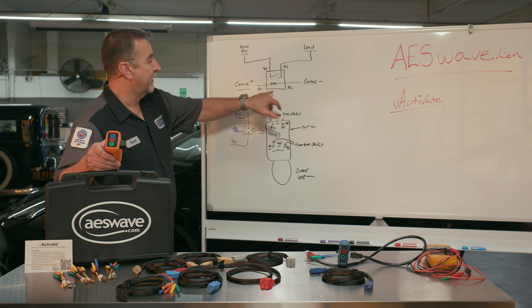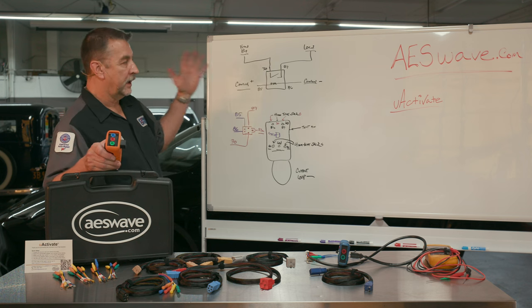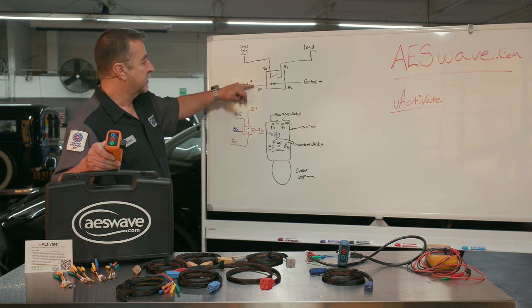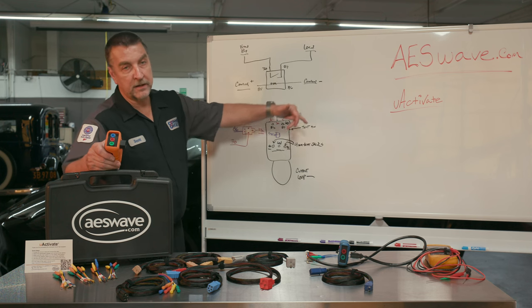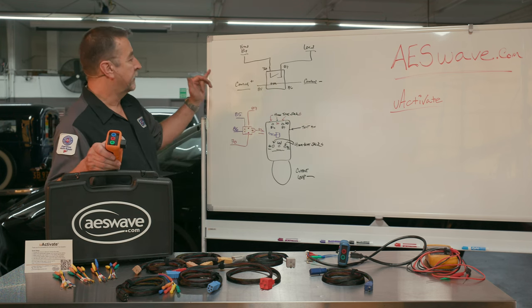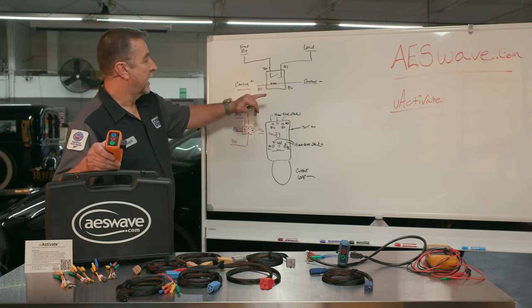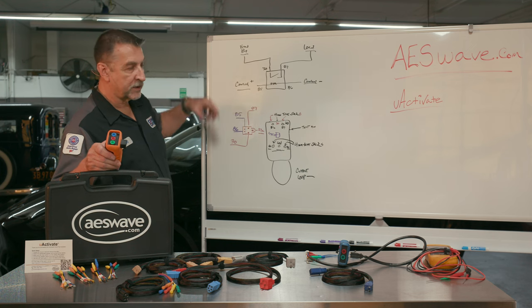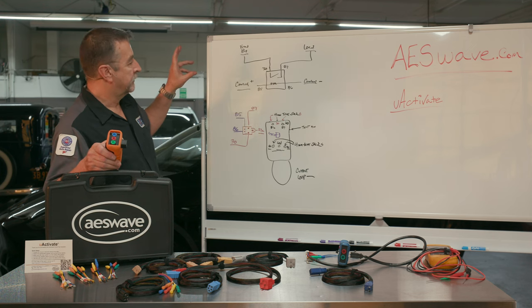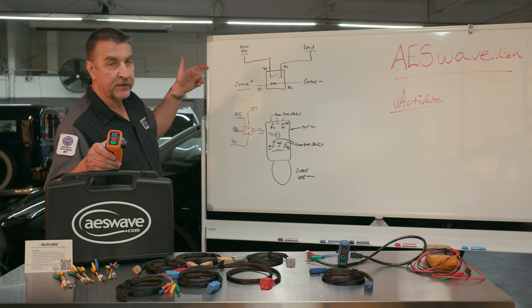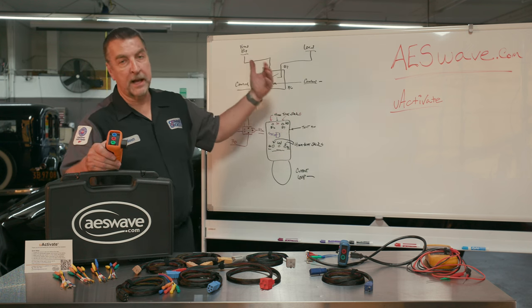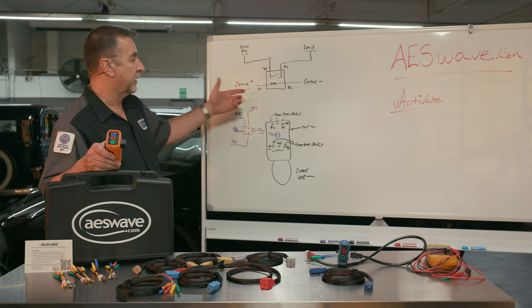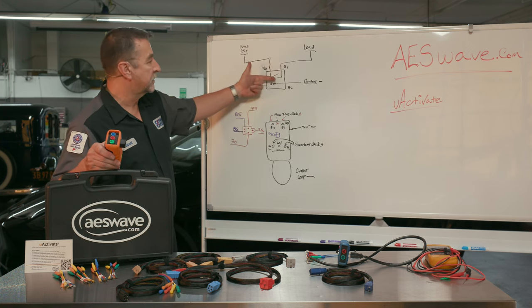You have a control circuit, 85 and 86. Depending on the manufacturer, they could be controlling or driving this high and this side is low, permanently low, right to ground. Or it could be that this side is switched high with a key, maybe through ignition, and then the control side goes to a module and that module pulls it to ground. Nevertheless, it's trying to close this switch.